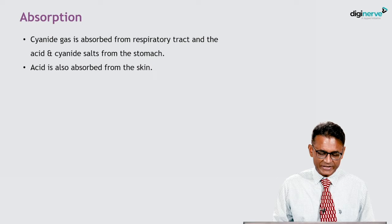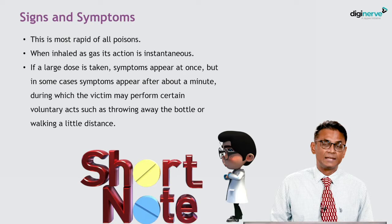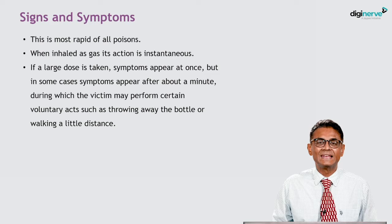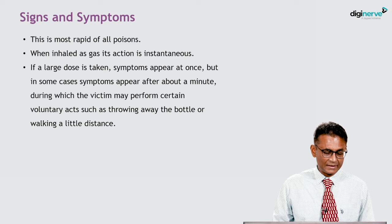Cyanide gas is absorbed from the respiratory tract, and the acid and cyanide salts from the stomach. It is also absorbed from the skin. Cyanide is the most rapid of all poisons. When inhaled as a gas, its action is instantaneous. If a large dose is taken, symptoms appear at once, but in some cases symptoms appear about a minute later, during which the victim may perform certain voluntary acts such as throwing away the bottle.